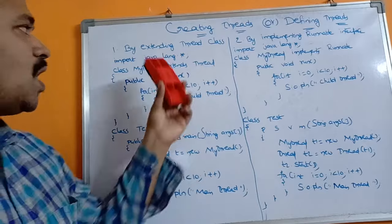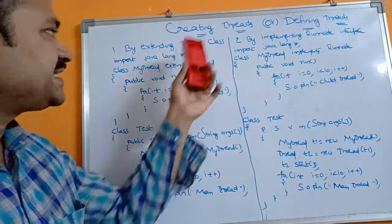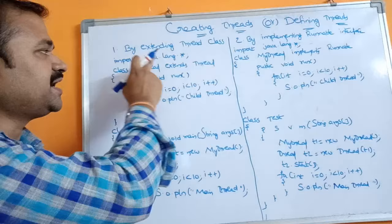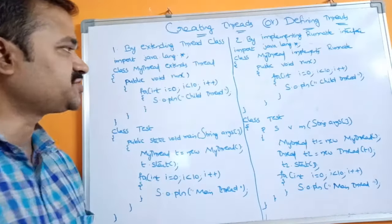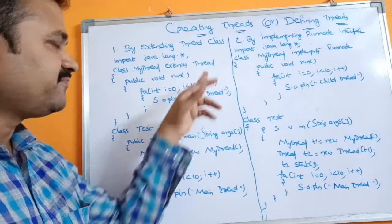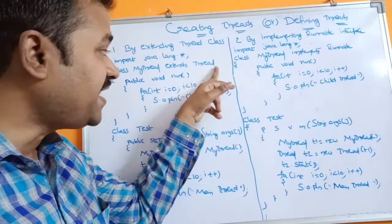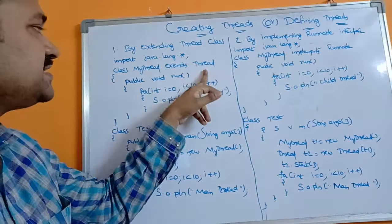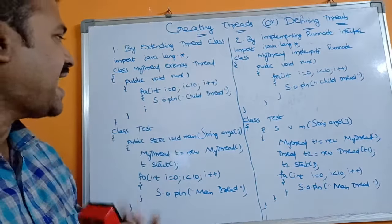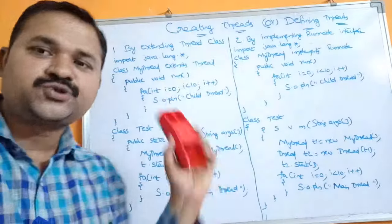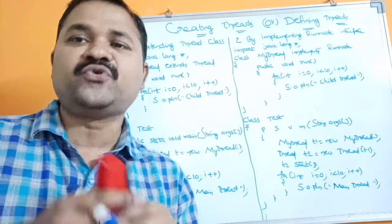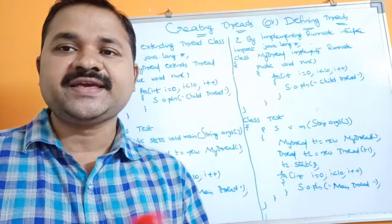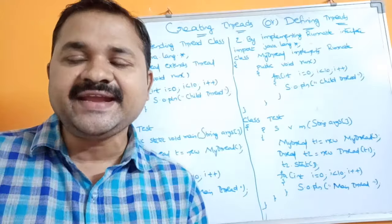Let's see the first approach — how we can create a thread by extending the Thread class. Here we are using the java.lang package because we are using a predefined class called Thread class, which is present in that package. Totally we have four steps.